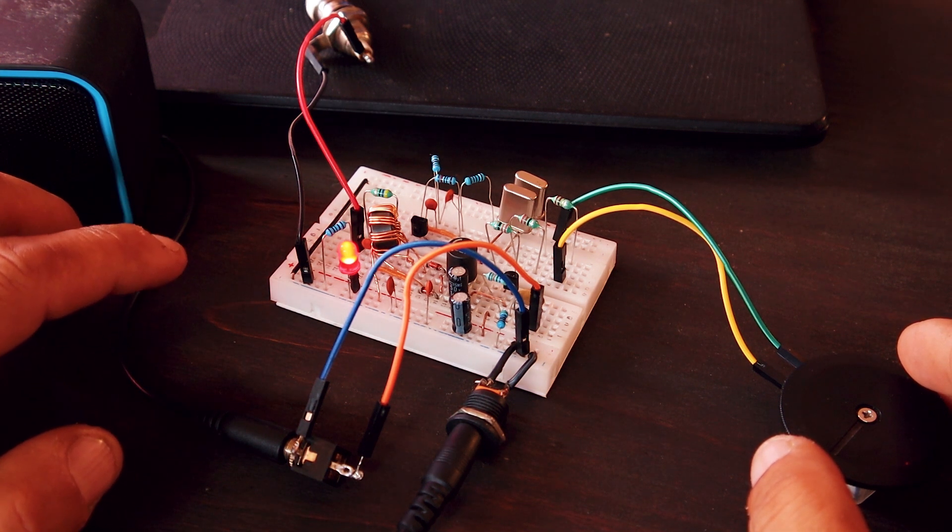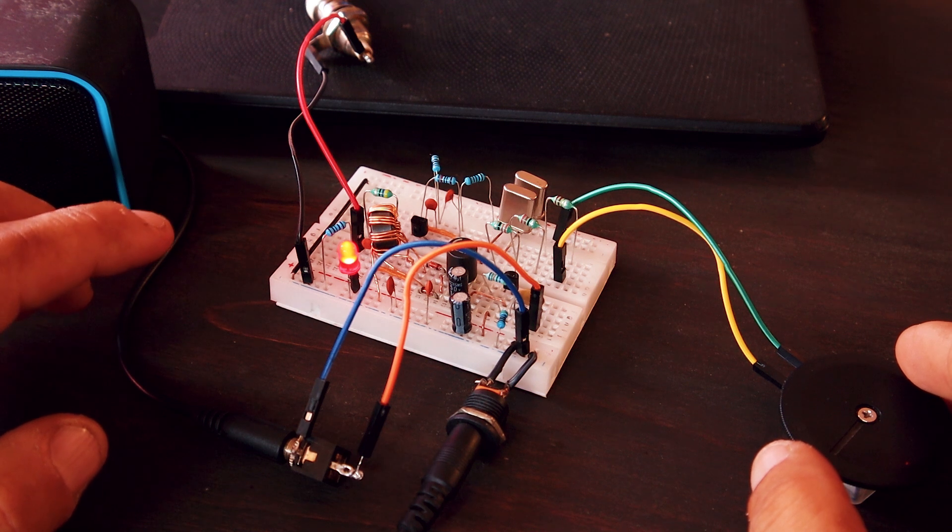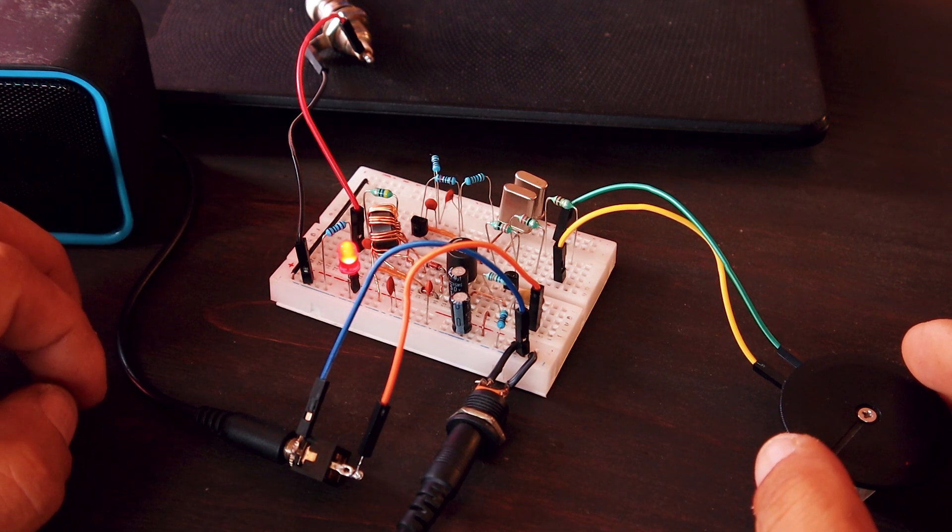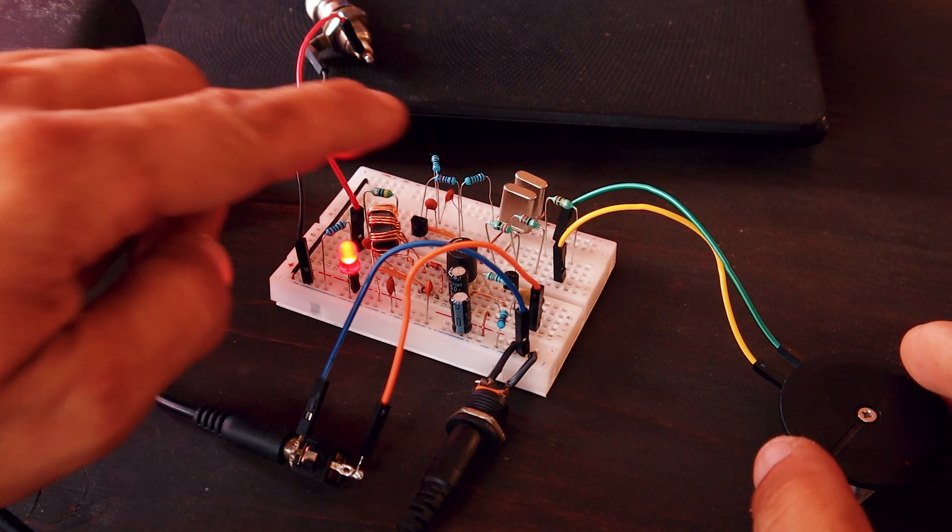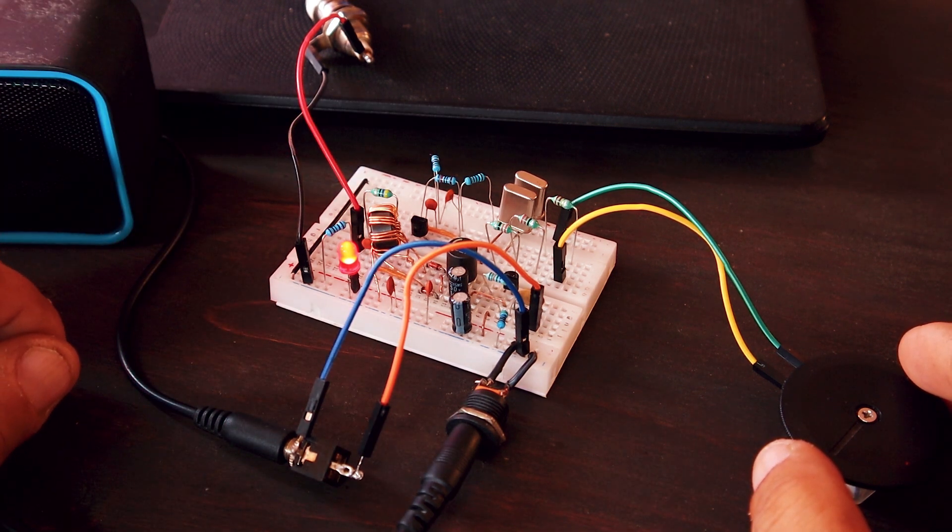I changed my mind and I didn't build it Manhattan style, just because I wanted to do a little bit of experimenting. Of course, and that was a good idea because I ended up modifying the VXO circuit in order to cover the entire CW portion of the 40 meters band.